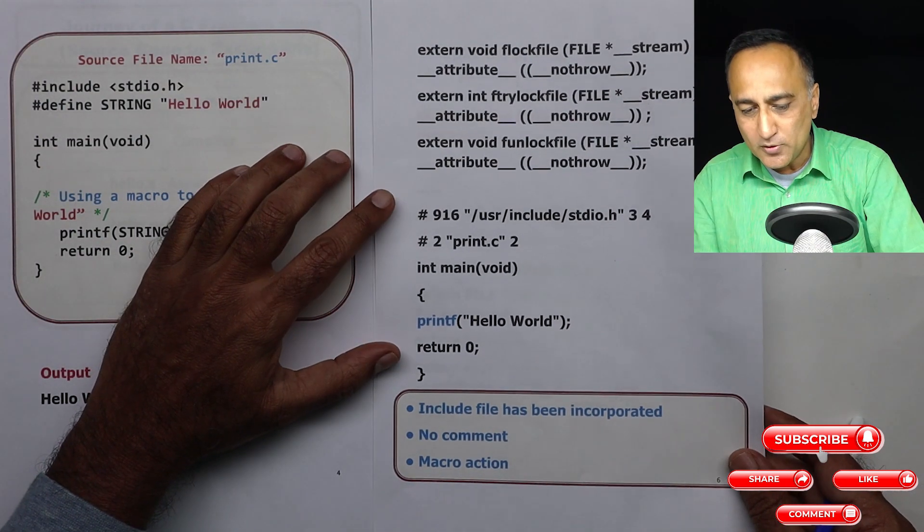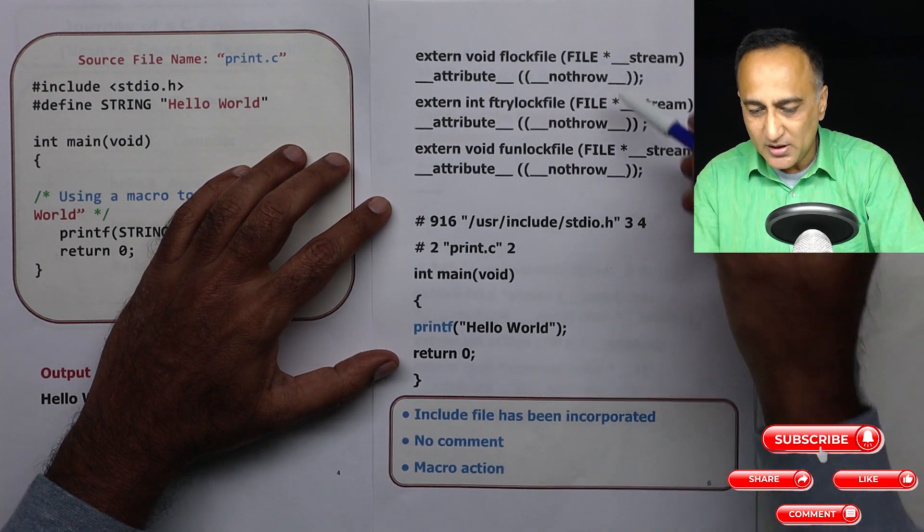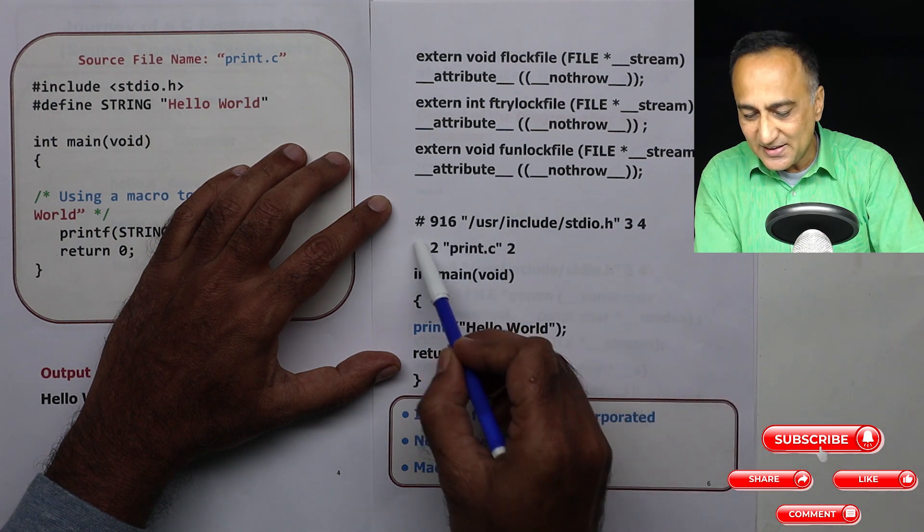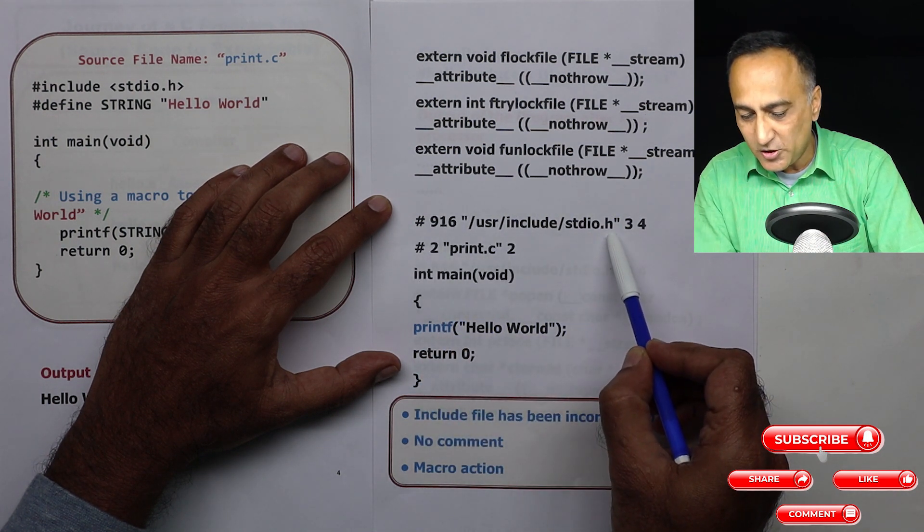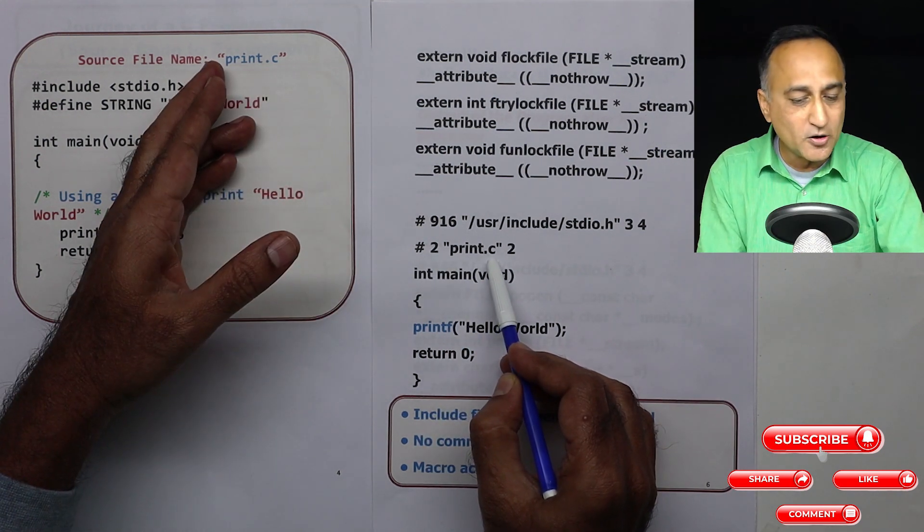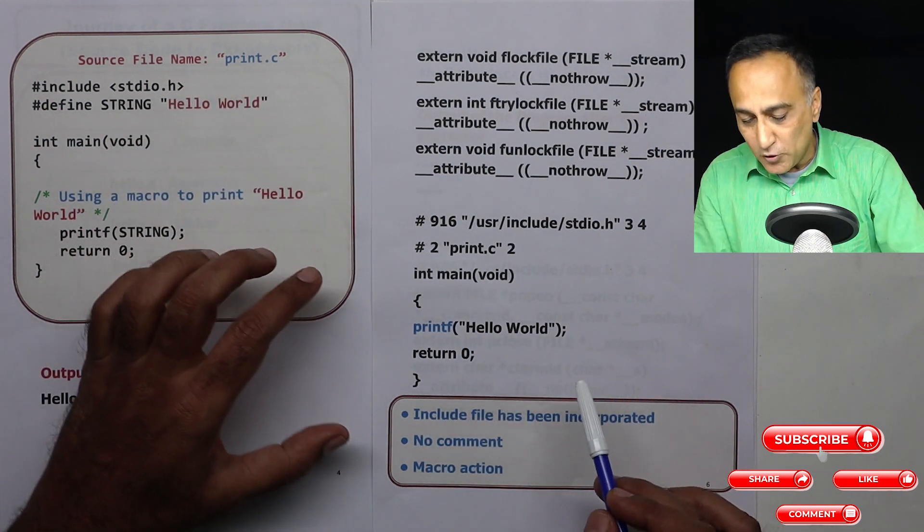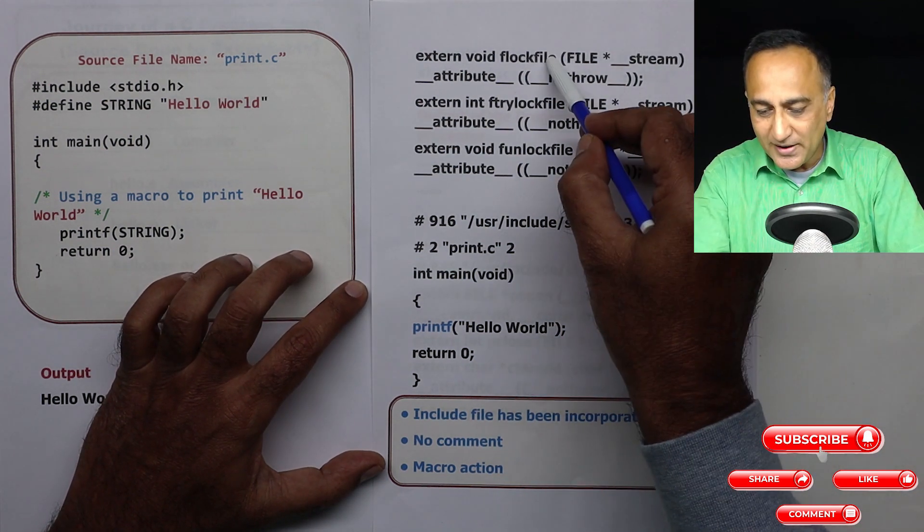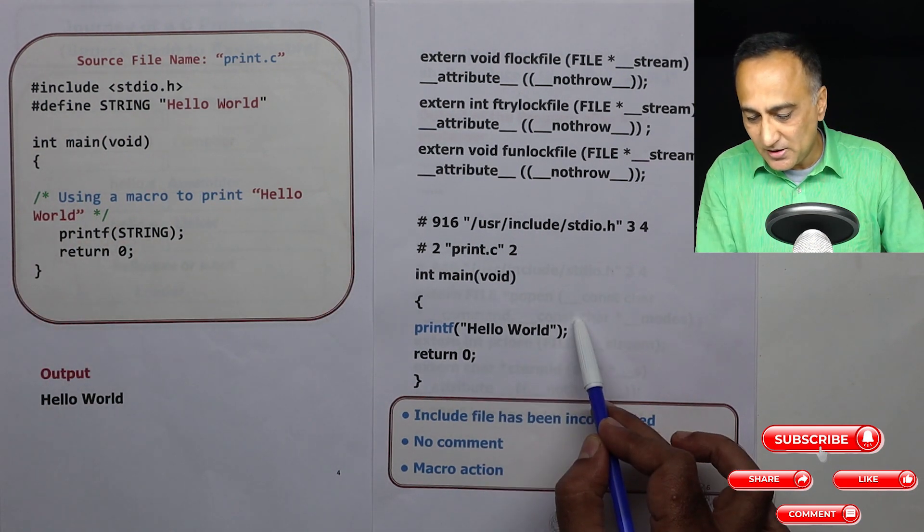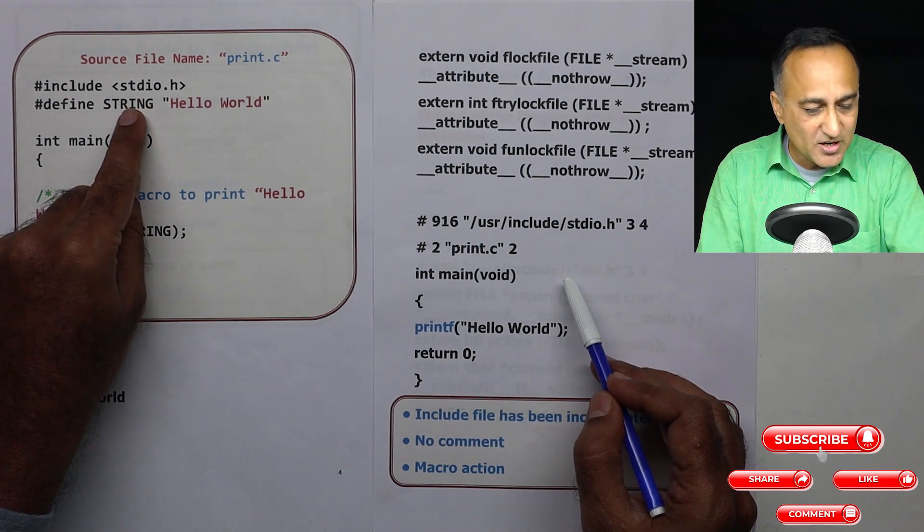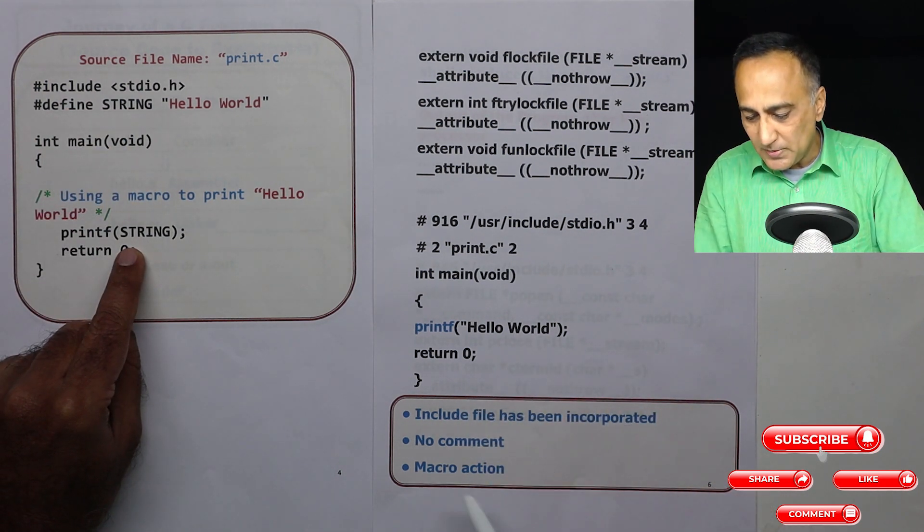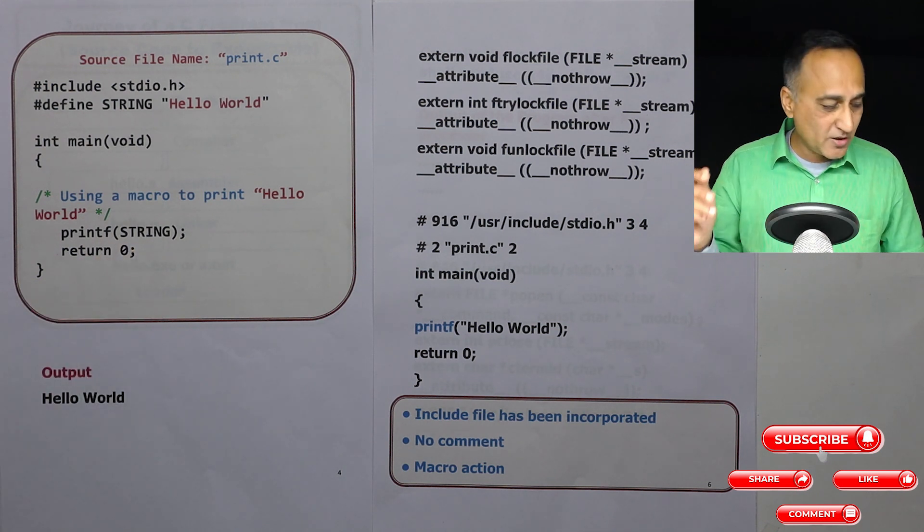So this is the output of the preprocessor. Now you can see here the output of the preprocessor is continuing. Here if you see it indicates that it has included the header file stdio.h. Now this is the name of the file we created print.c. Now if you notice here the three things I mentioned happened. The include file has been included. Then the comment has been chopped out. This comment has disappeared here. And then this string has also disappeared and this string has been replaced by hello world. So the preprocessor has done its job what it is required to do.